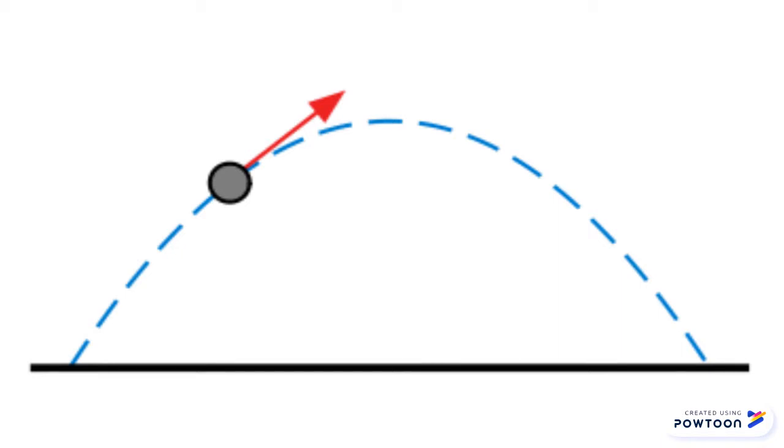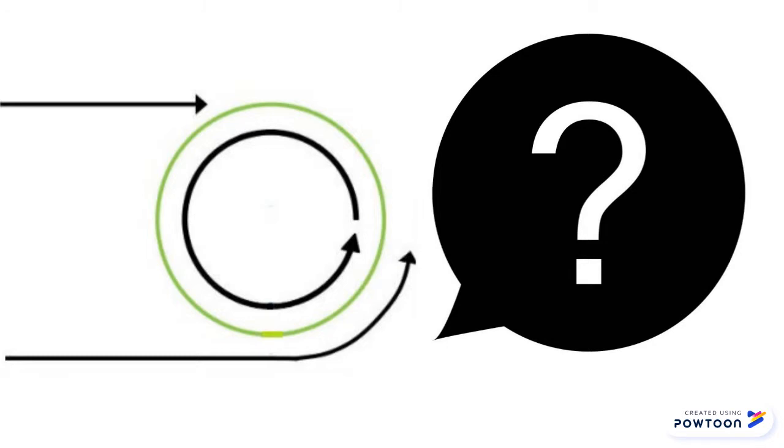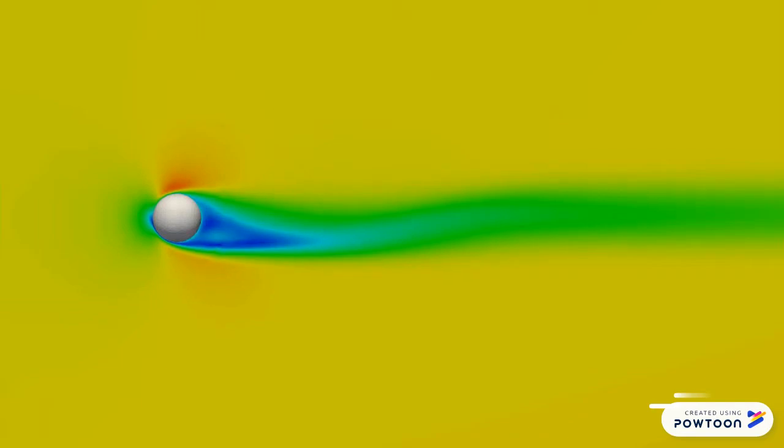But what would happen if we threw a cylindrical object and it had a rotation of its own? The answer to this question would be the Magnus effect.